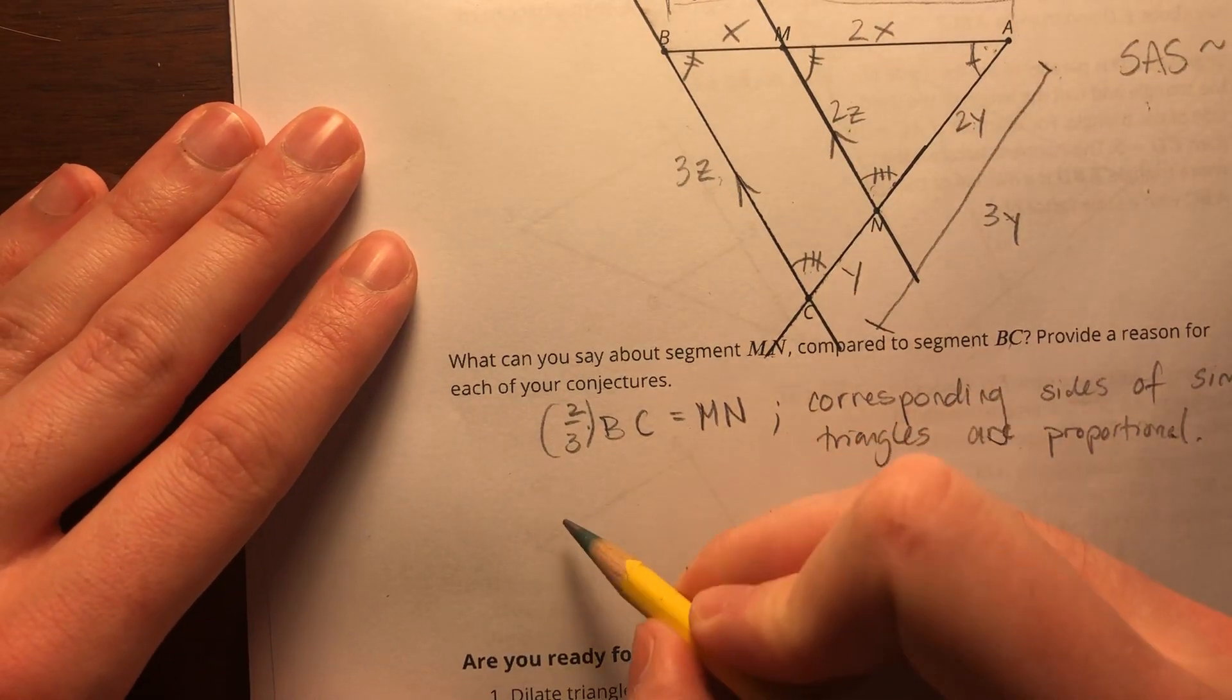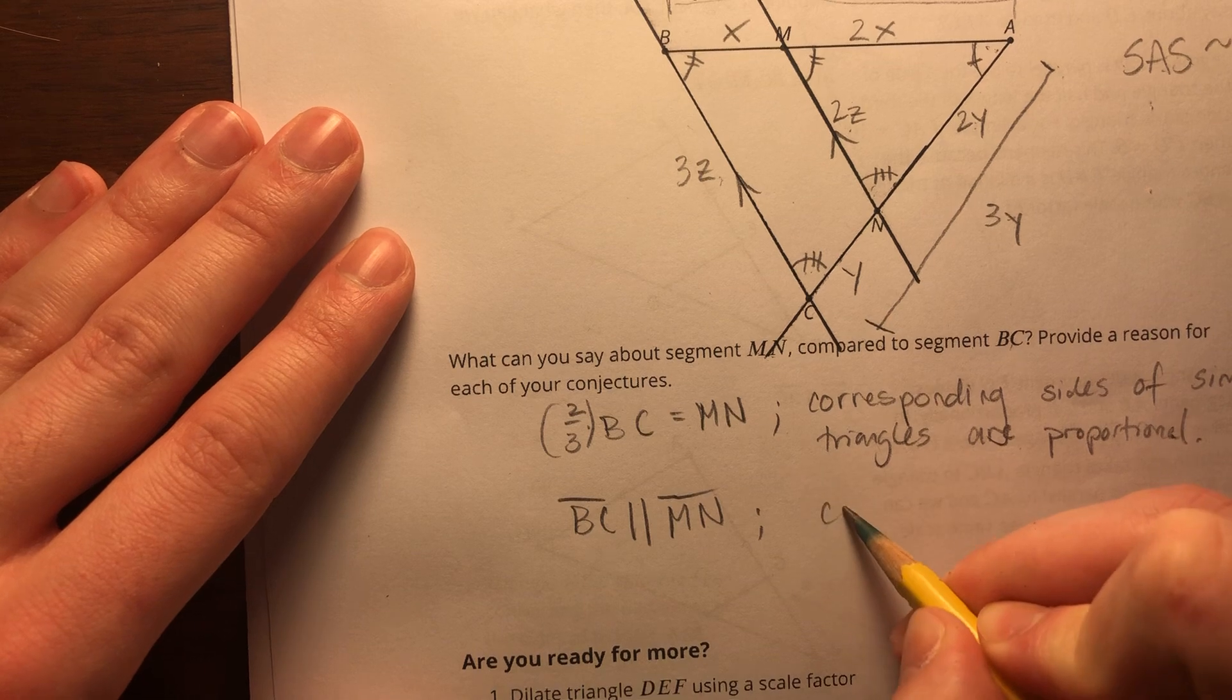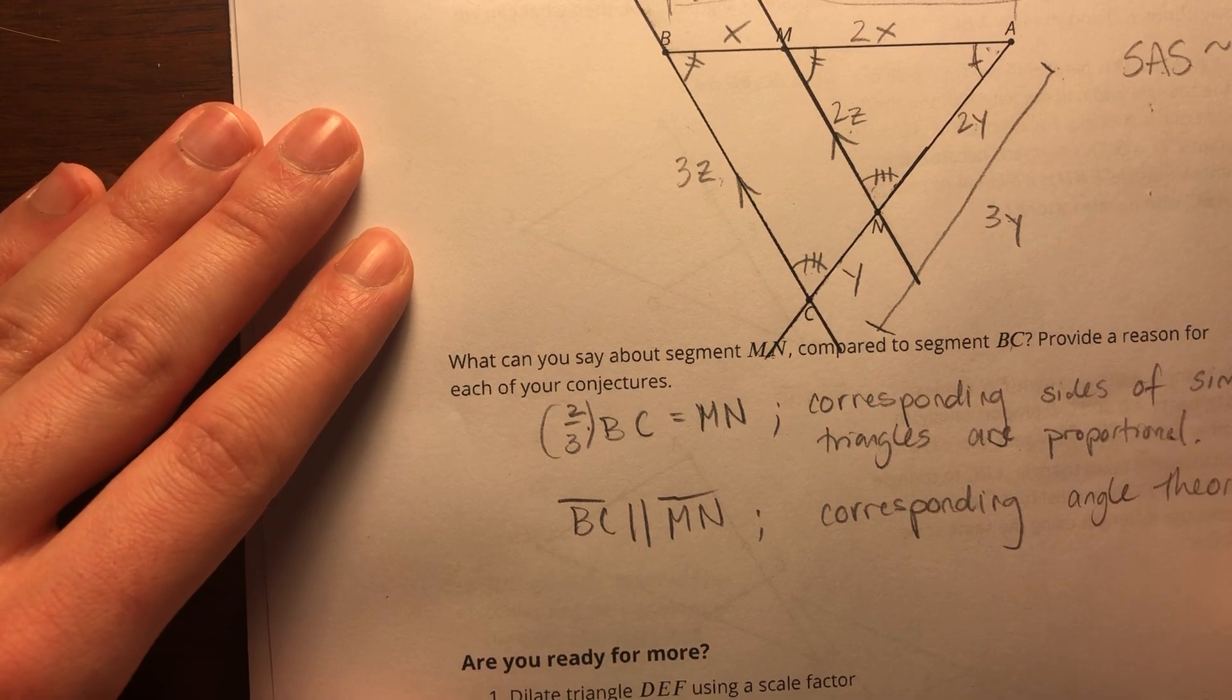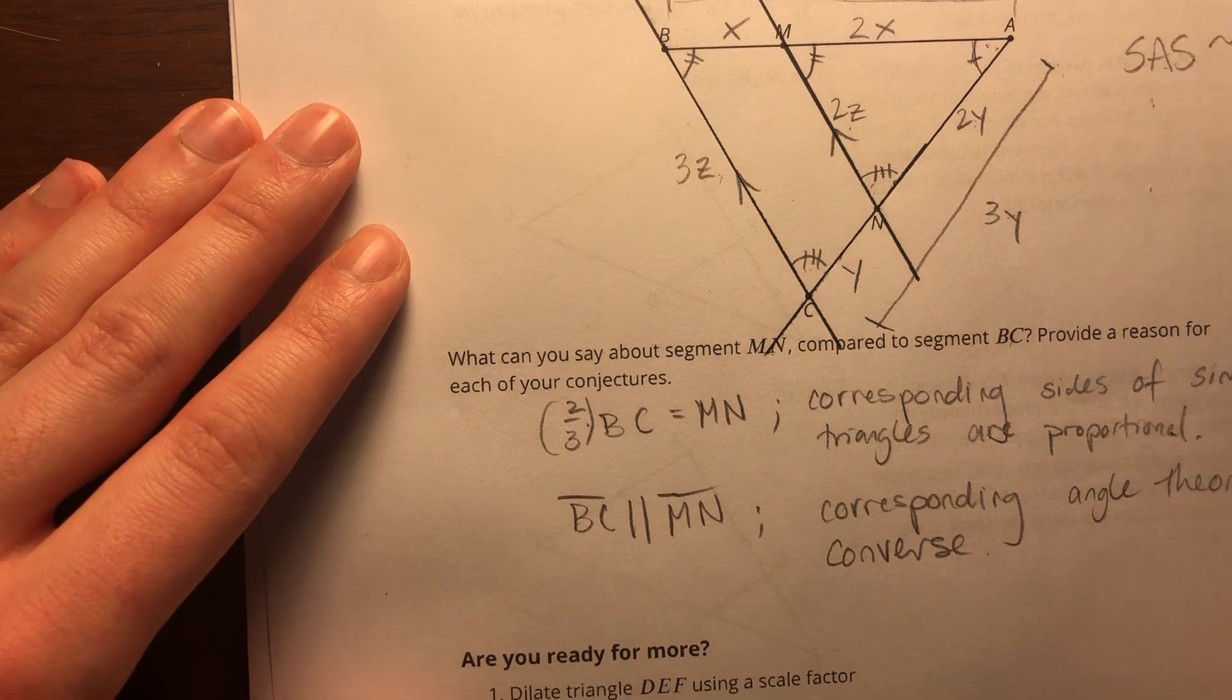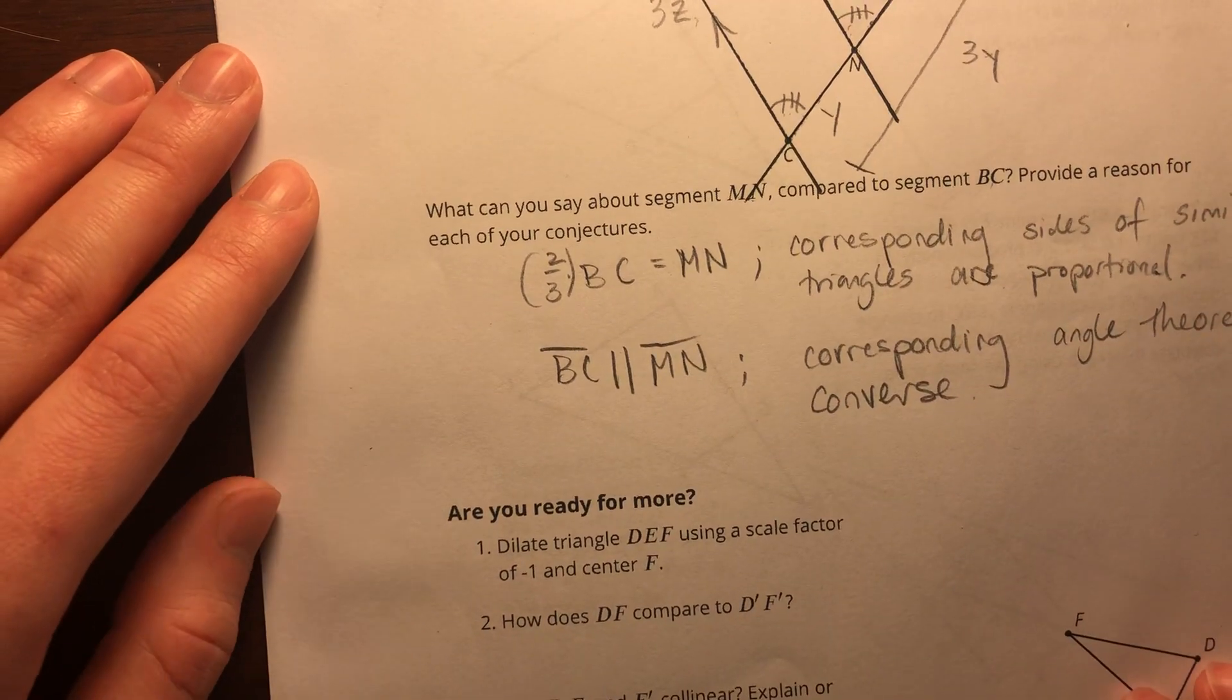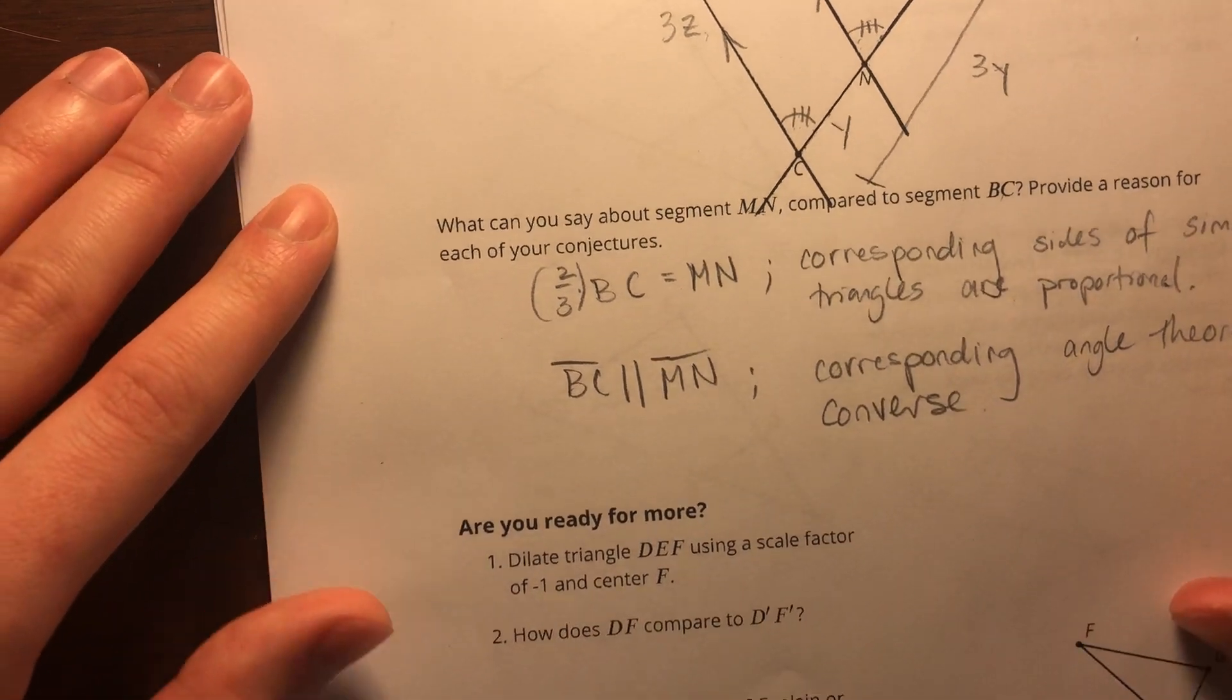So we can say that BC or line segment BC is parallel to line segment MN by the corresponding angle theorem converse. And that really is all we can say about those two sides, that they have a scale factor making them proportional, and then they also have to be parallel, because these angles are congruent and corresponding.